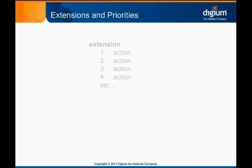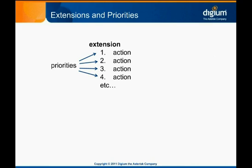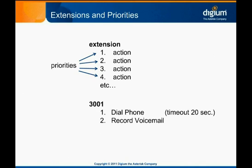Each dial plan extension has one or more priorities. The term extension is used to mean the set of all the priorities for a given extension. Having multiple priorities allows an Asterisk administrator to specify multiple actions to be performed on the dialing channel. For example, a common extension might involve two actions: dialing a phone, and then, if the phone is unanswered after a specified timeout period, prompting the caller to record a voicemail message. This extension would have the dial action listed as priority 1 and the voicemail action listed as priority 2.